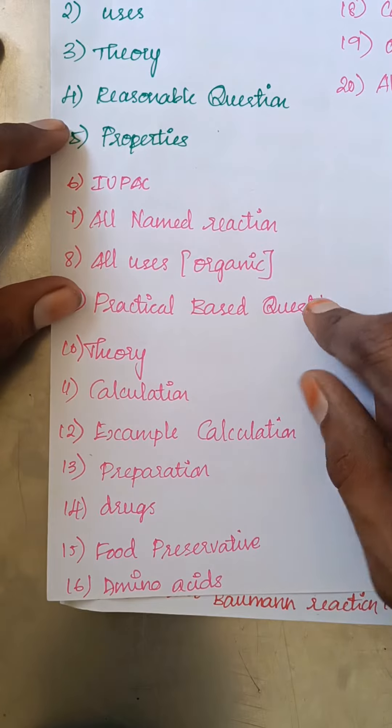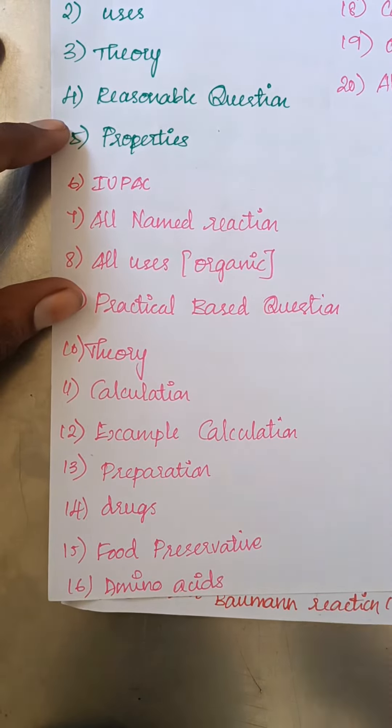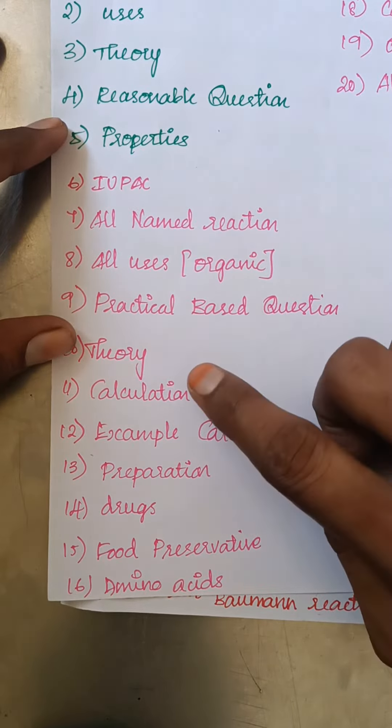We will talk about practical based questions. Test for alcohol, phenol, carboxylic acid, differentiate between primary, secondary, tertiary amine. That is theory.